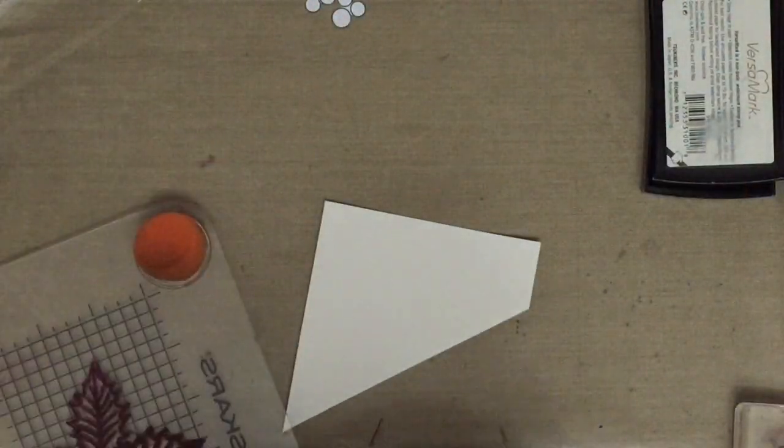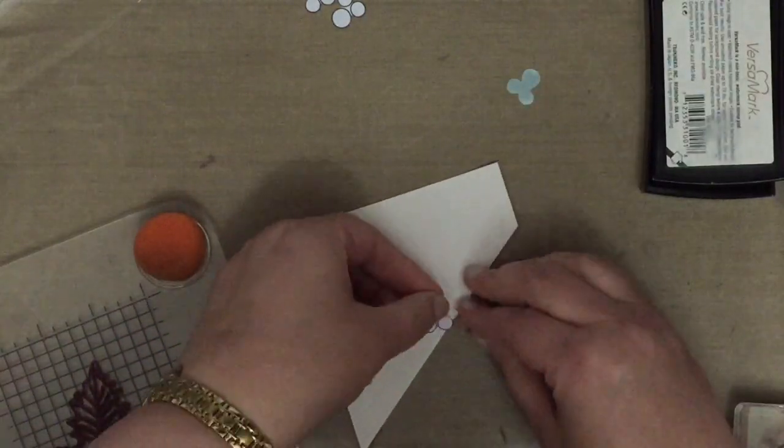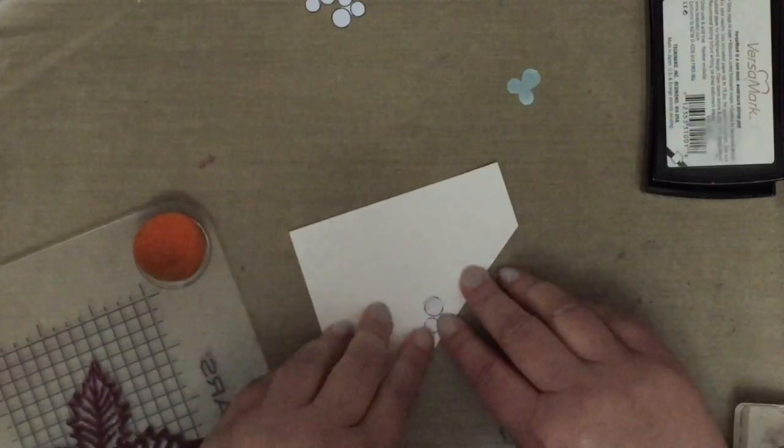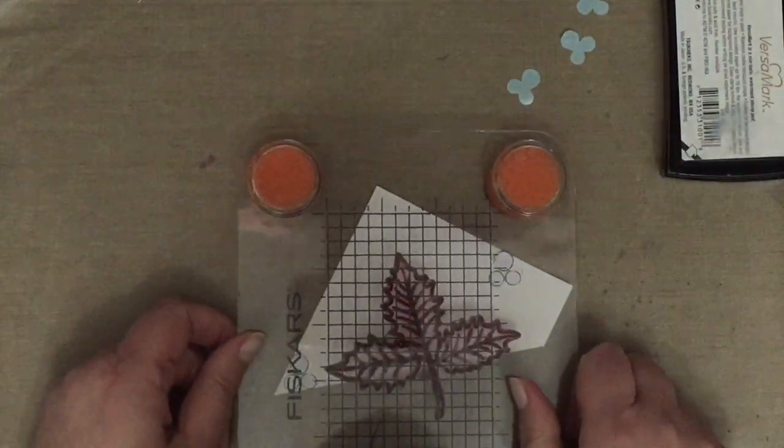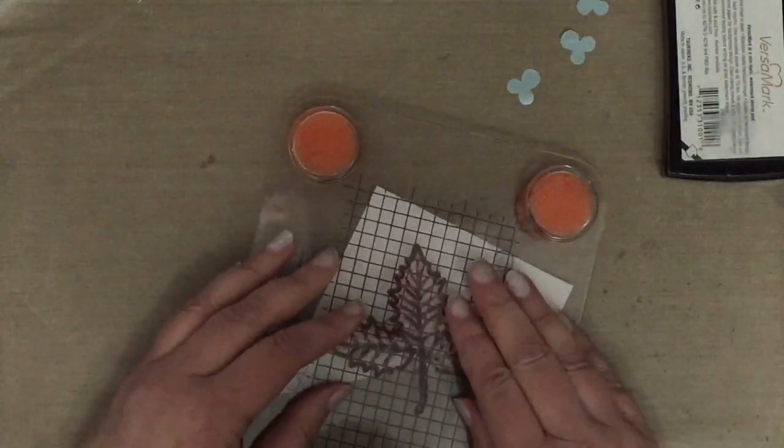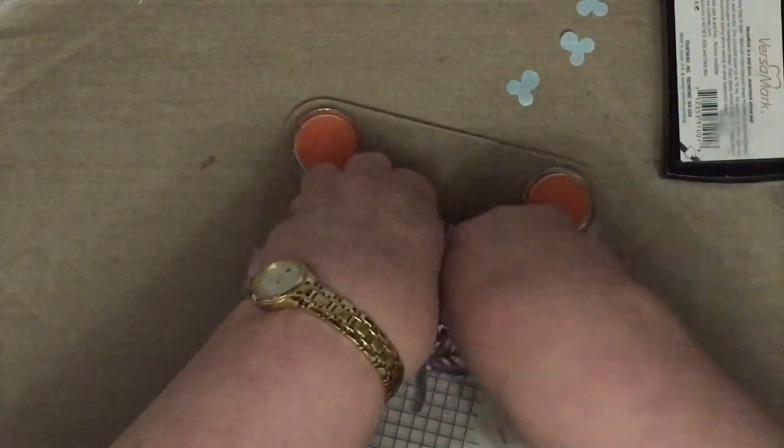Because once you've stamped with the leaves, even when you have embossed it, it's still a little bit hard to see where those leaves have been stamped. It's certainly easier when it has been embossed than when it hasn't. So I decided to do it little bit by little bit and emboss as I went.